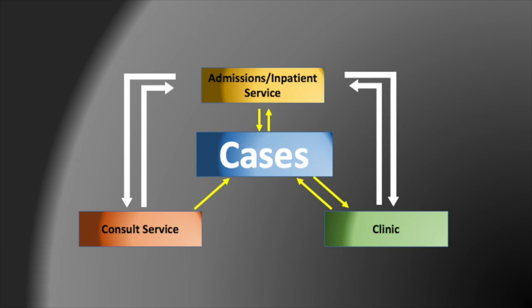The admissions and inpatient service, which is on top, has a bi-directional workflow with the case service. For example, a patient may be admitted to the IR service, prepared for a procedure, and then sent to the case team to have it performed. Alternatively, patients that have just had a case performed may be admitted to the hospital and followed by the inpatient service. There is also a bi-directional workflow with the outpatient clinic — once a patient has had a procedure, they may be discharged home if stable and seen in clinic for post-procedure care, or a patient may be evaluated in clinic for a potential treatment and then scheduled with the case team to have it performed.